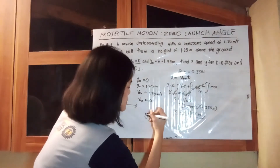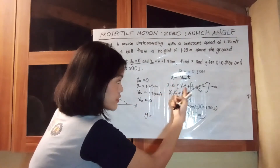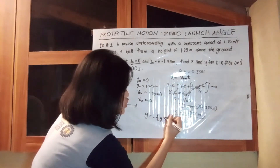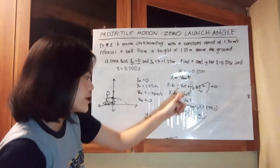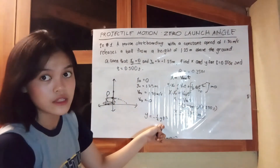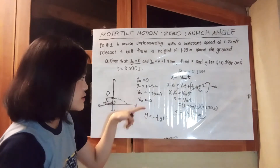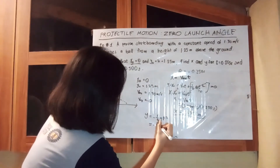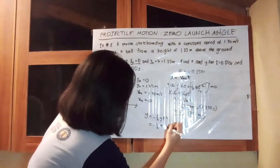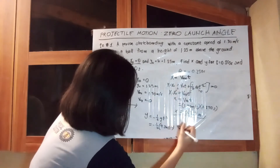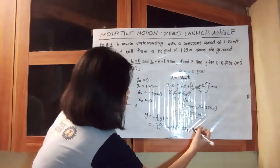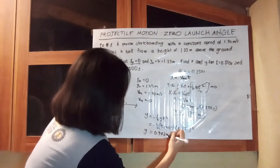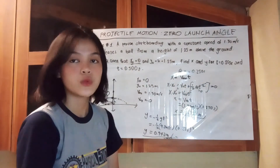For the y-component, using the same derivation, we end up with y equals negative one-half g t squared, because acceleration for y is negative gravity and the initial velocity for y is zero. Calculating: negative one-half times 9.81 meters per second squared times 0.250 seconds squared gives y equals negative 0.306 meters at t = 0.250 seconds.